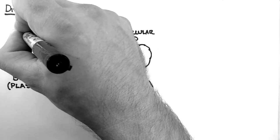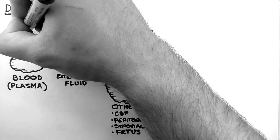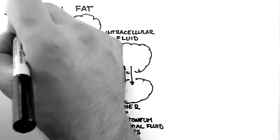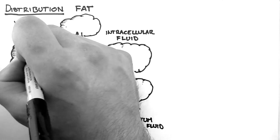So if a drug is placed into one of the compartments, we can see how it might move and distribute into other compartments. Often drugs are placed into the blood. These are drugs which are given intravenously.